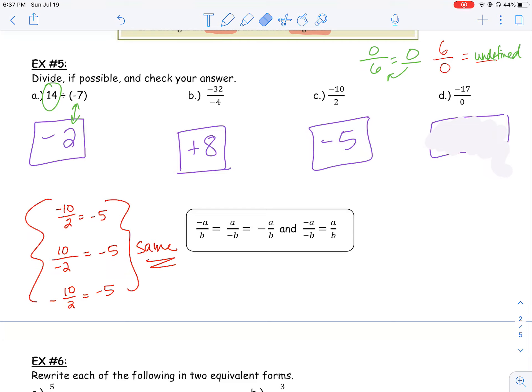All right, what about D? Negative 17 divided by 0. Be careful. Remember, we can't ever divide by 0, so that answer is undefined, because 0 times nothing gives me negative 17, right? So that problem is undefined. We can't do it.